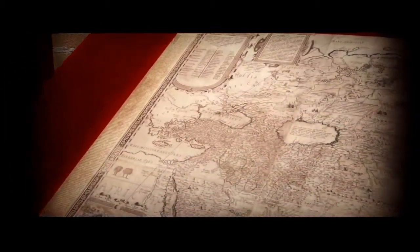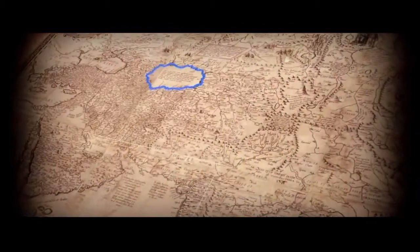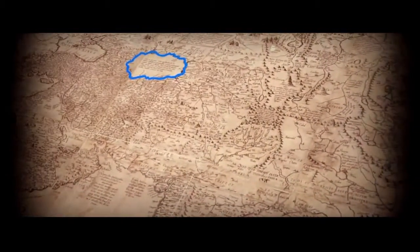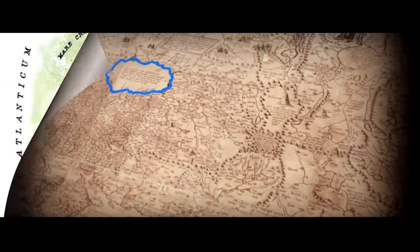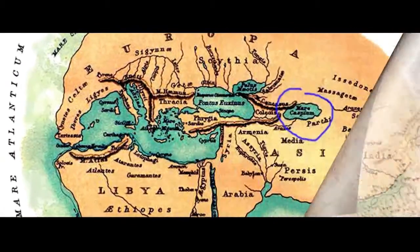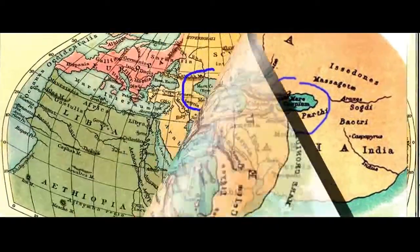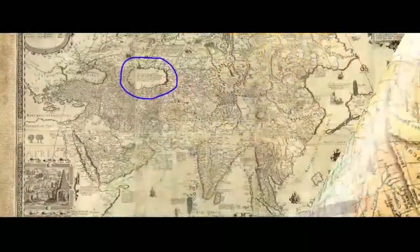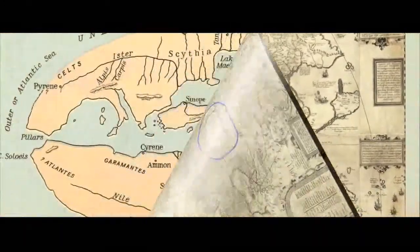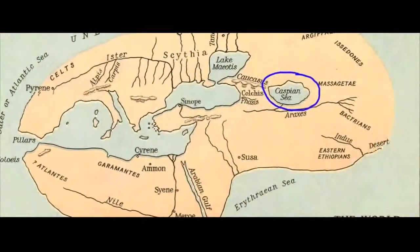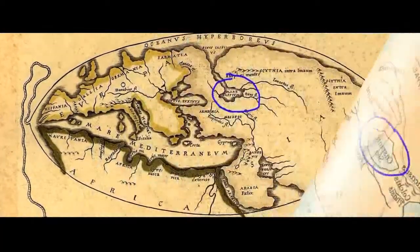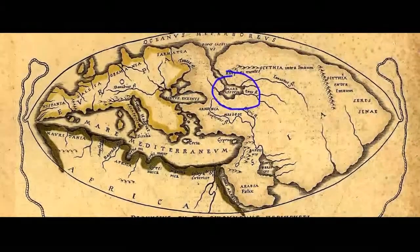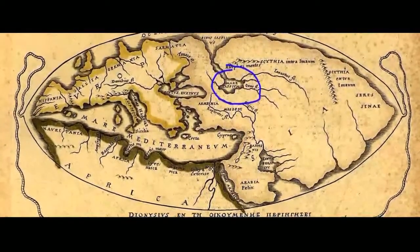In many ancient maps, the Caspian Sea is depicted in the form of an oval stretched from west to east and not from north to south. In our opinion, this image of the Caspian Sea stretched in the latitudinal direction cannot be a mistake, since such a contour is depicted on most maps of the ancient world by different authors.